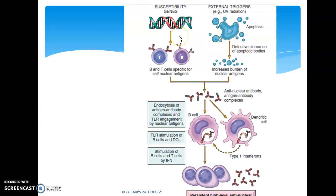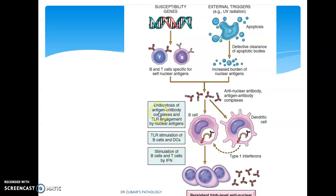UV radiation causes defective clearance of apoptotic bodies, which becomes nuclear debris. This activates B and T cells, leading to engulfment and endocytosis of antigen-antibody complexes, toll-like receptor engagement by nuclear antigens, stimulation of B cells and dendritic cells, and stimulation of B and T cells by interferons.